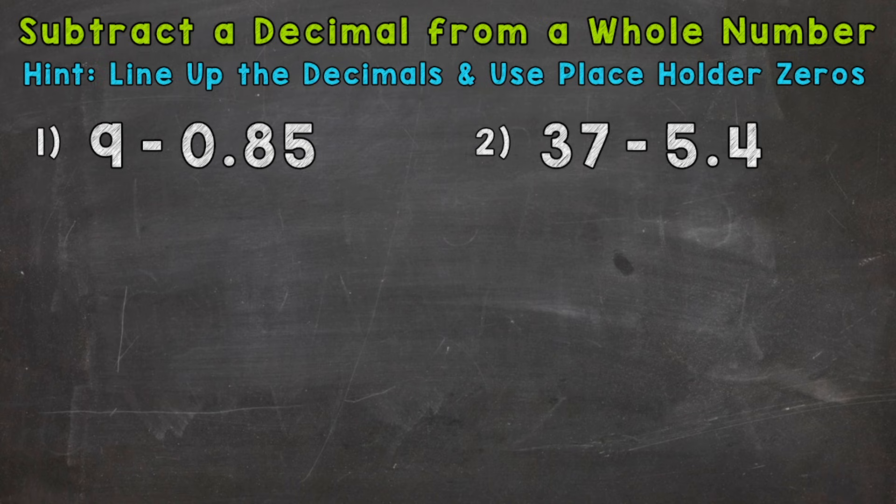And the first thing we need to do for this problem is set it up correctly. And at the top of your screen, we have a hint that we're going to use. So we need to line up the decimals and use placeholder zeros.